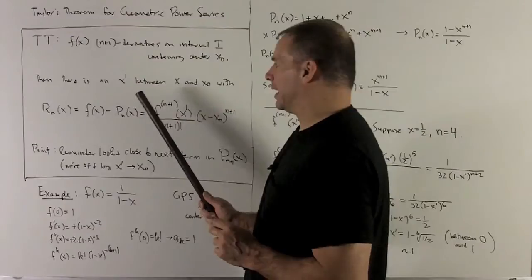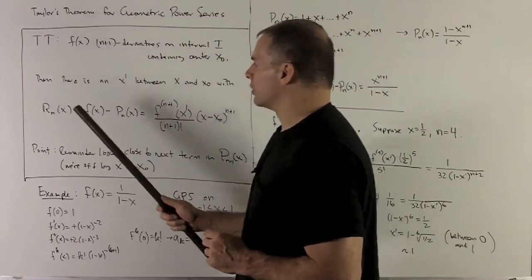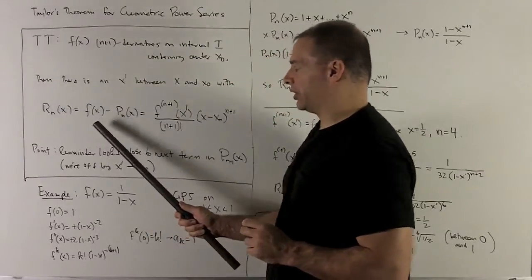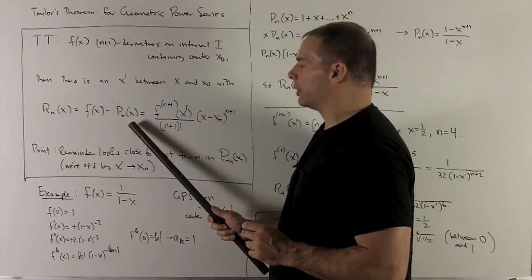Then there's going to be an x prime between x and x0 such that the nth remainder function is given by taking your function, subtract off your nth Taylor polynomial.